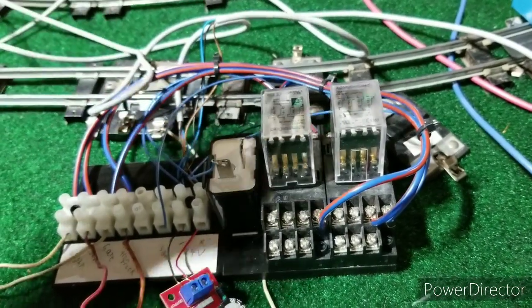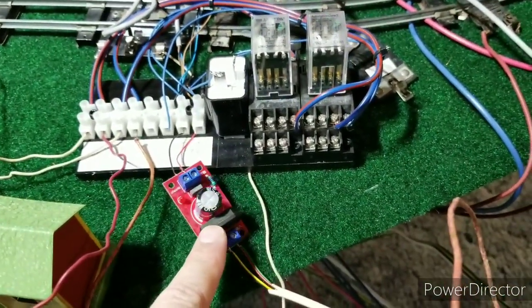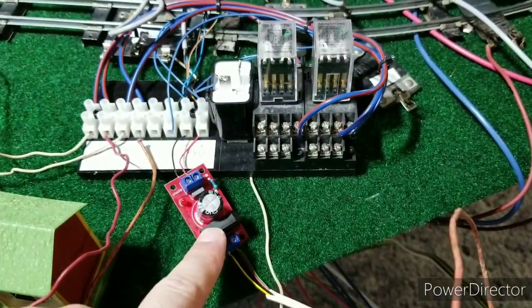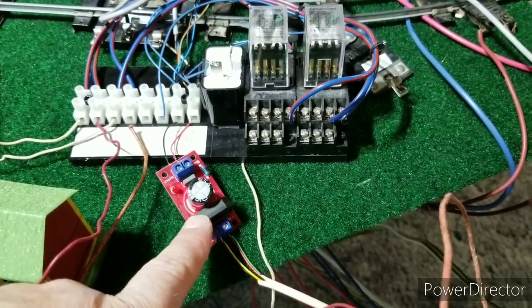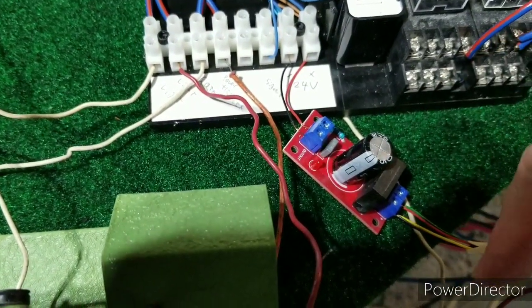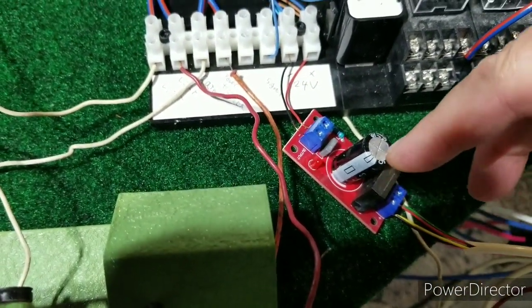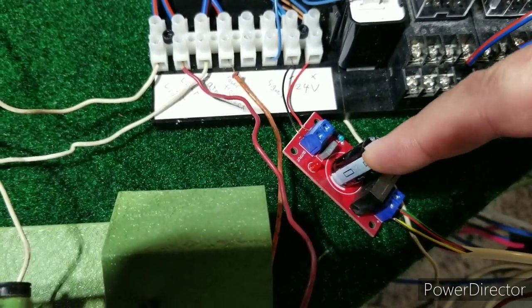And here is a flasher relay like you'd buy for a motorcycle. We have a little power supply here. This is taking my AC current from my American Flyer transformer and just changing it to DC. This converts the AC to DC.